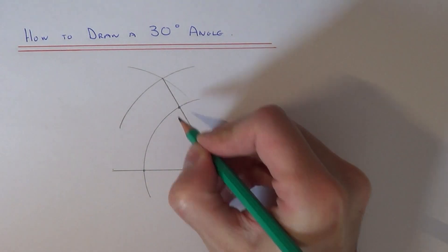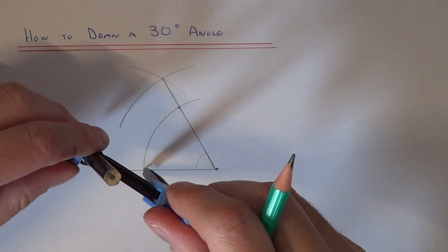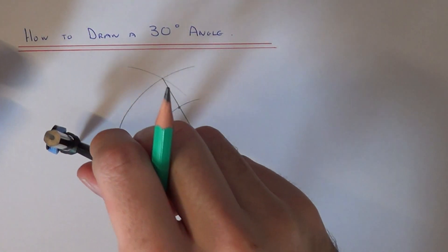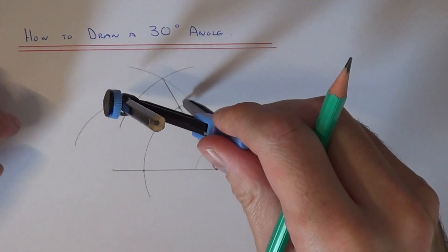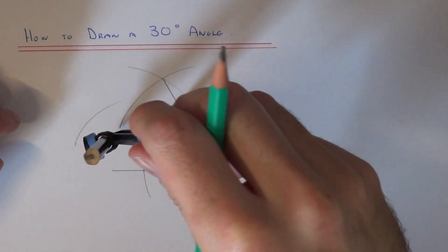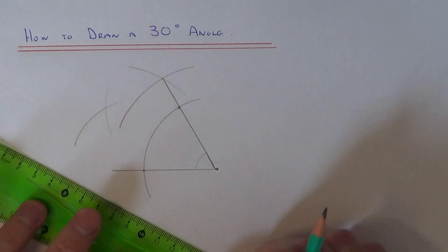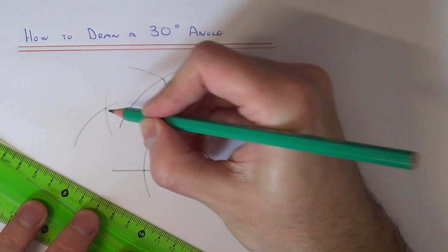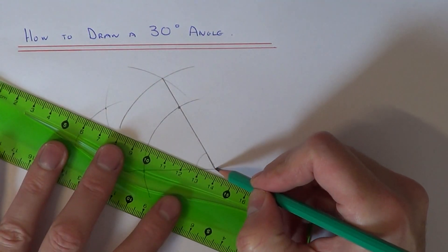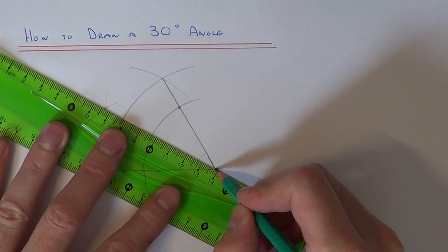to this point and this point here, and draw another two arcs. And now join this intersection point here back to the centre point.